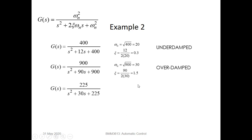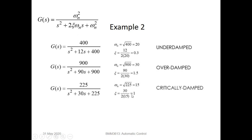The third example is when G(s) equals 225 divided by s-squared plus 30s plus 225. The natural frequency is 15 and the damping ratio equals 1. The system is critically damped.